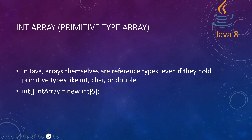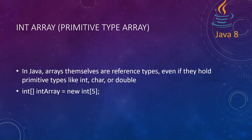This is the syntax for declaring an array. You have 'int' — the data type — followed by square brackets, then a variable name. So 'int[]' makes it an array reference type. You use the 'new' keyword and pass the size of the array — for example, 5. Since I'm using int with array syntax, I pass the size as 5, meaning elements at indices zero through four.